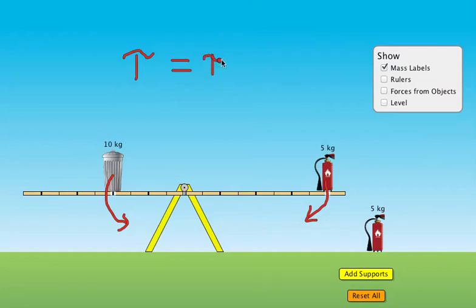To find the torque, it's just a product of radius and force. So the radius and the force when multiplied together for the trash can must equal the radius and force when multiplied together for the fire extinguisher.